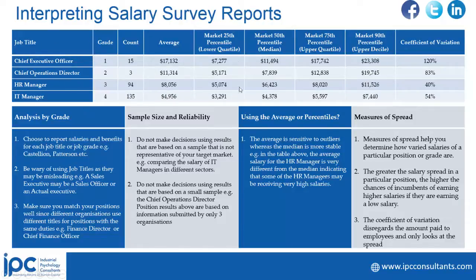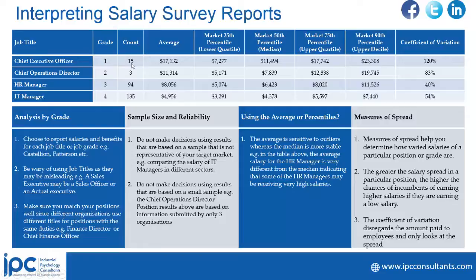When you look at this kind of information that I've presented here, you will find that we've got these four positions: Chief Executive Officer, Chief Operations Director, HR manager, IT manager. Then you will go to your grade. These grades could be your grading system or they could be a universal grading system. There are tables to cross-validate these grading systems if you want to know what kind of grading it is — maybe Patterson or other grading systems. What is also crucial to note is the count — how many positions — as this is almost also a representative of your sample. For example, if you look at the Chief Executive Officer, it means 15 positions, which means very likely 15 companies participated in this particular position.